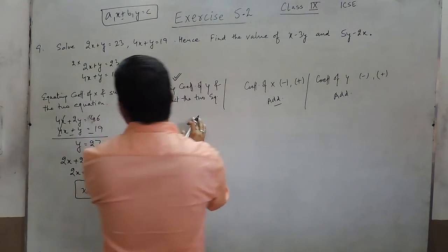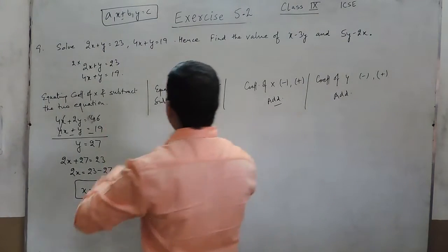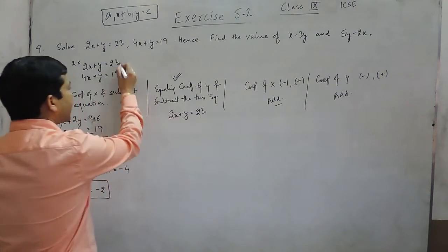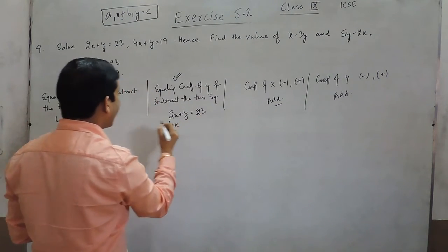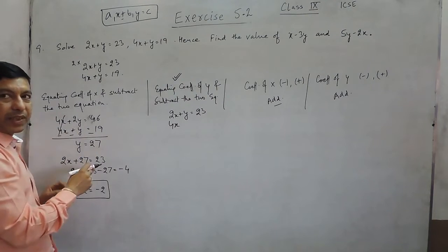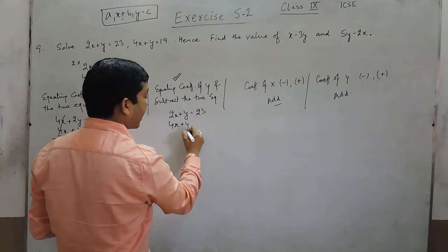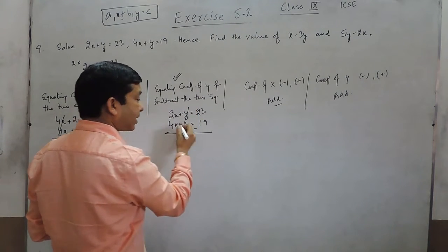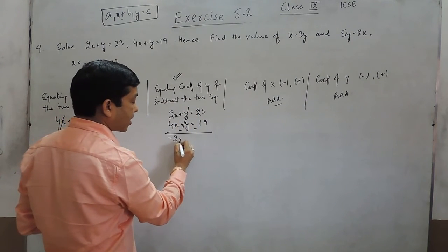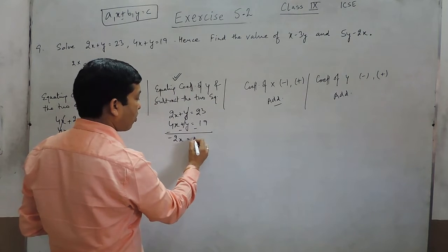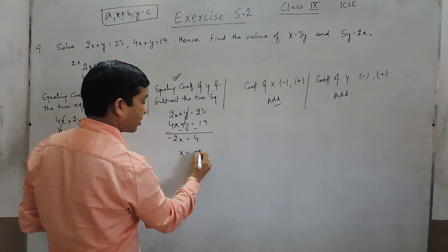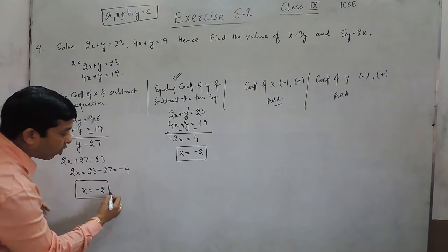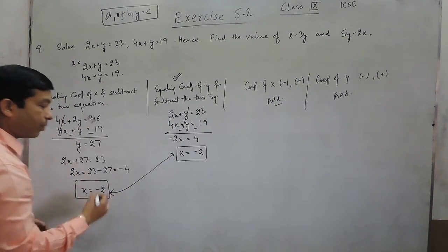Now we can also put it in the same manner that equating the coefficient of y, because the coefficient of y are already equal so we need not multiply the first equation by 2. Instead of this we can directly subtract, because this can be cancelled out. Here it is minus 2x equals 4 and the value of x becomes minus 2. So whether we solve it by this or this, the answer comes out to be the same.